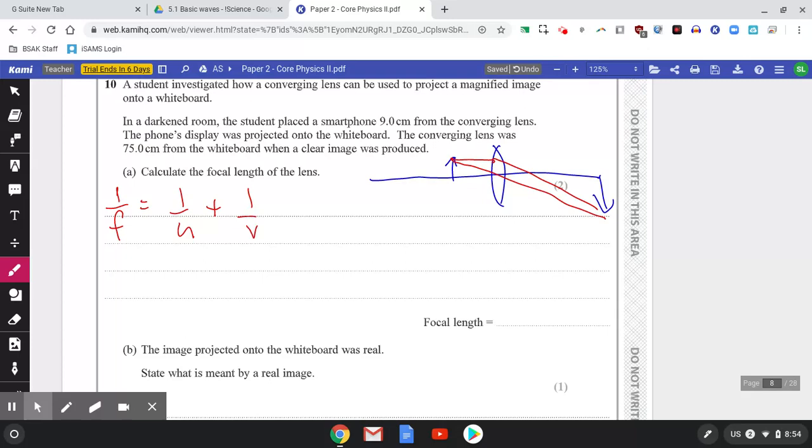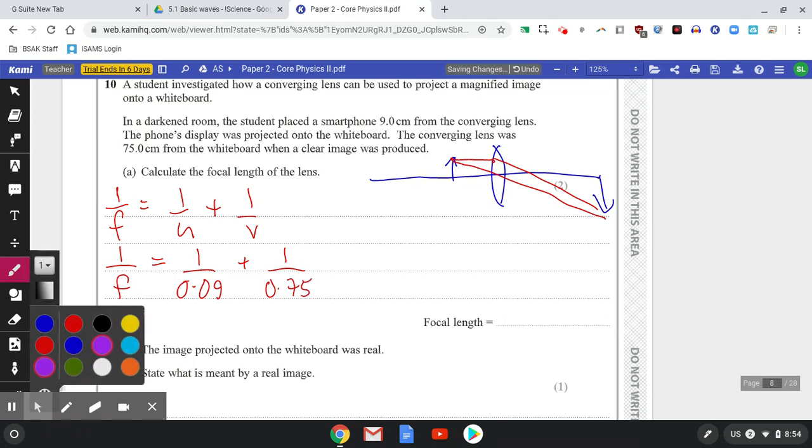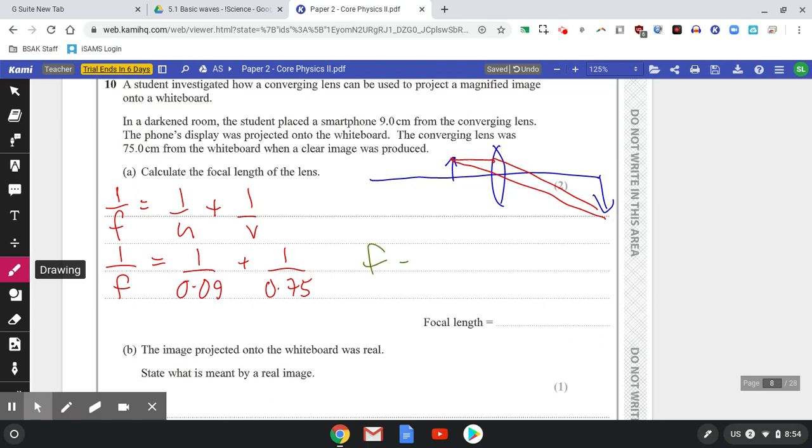Now u is the object distance, v is the image distance. We've got to convert them from centimeters to meters. So we have 1/f equals 1/0.09 plus 1/0.75. f comes out in meters: 0.08 meters.